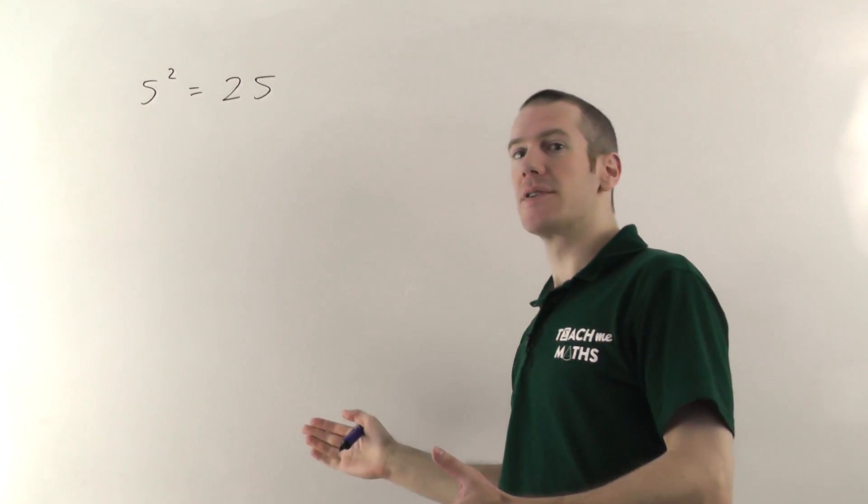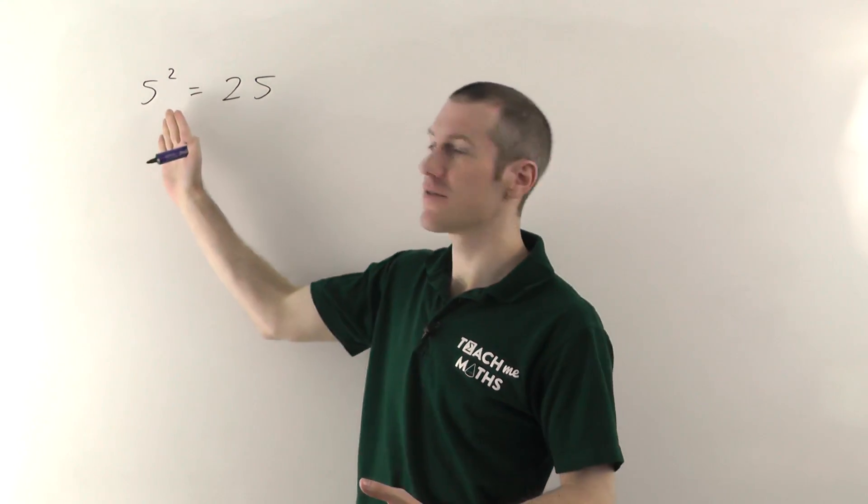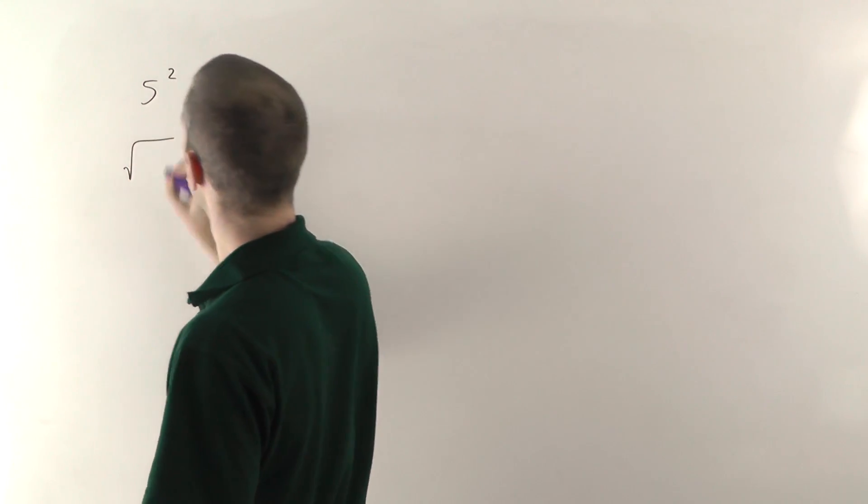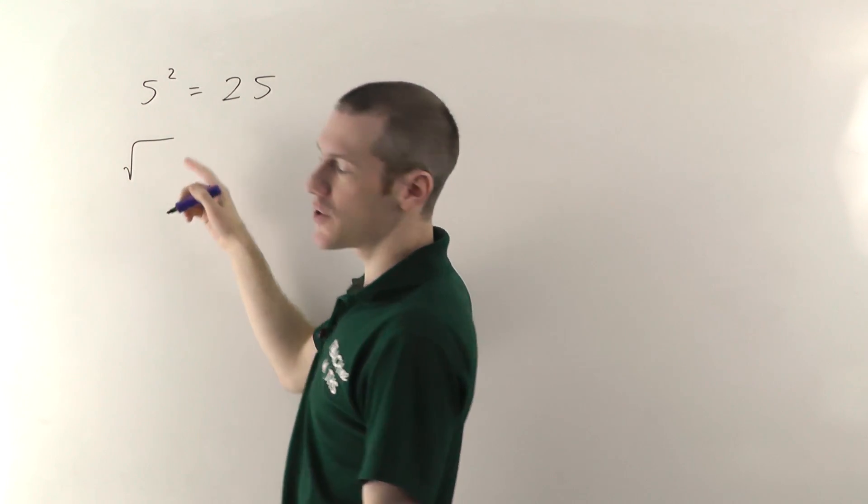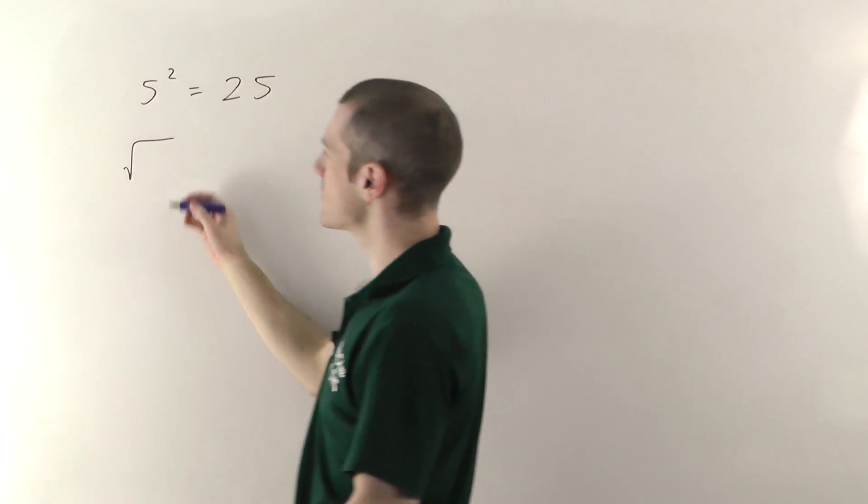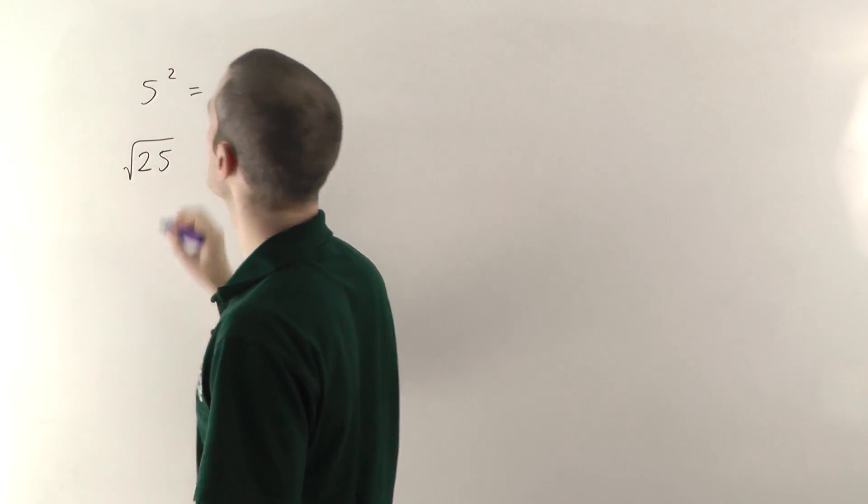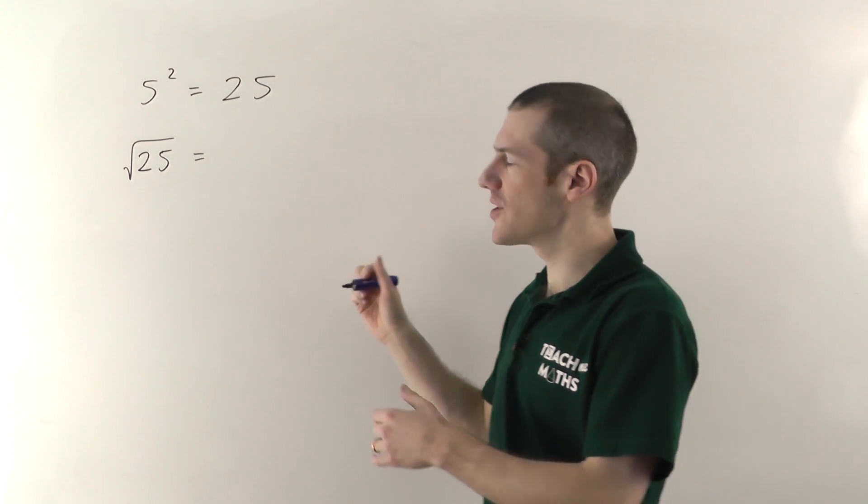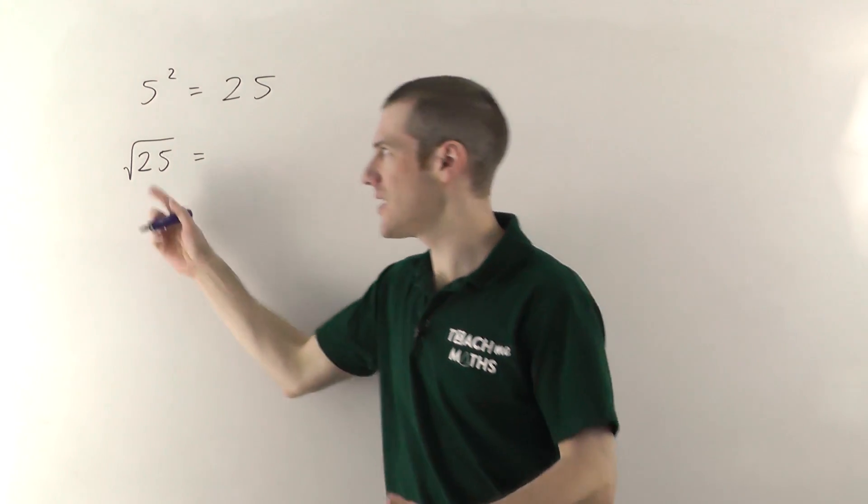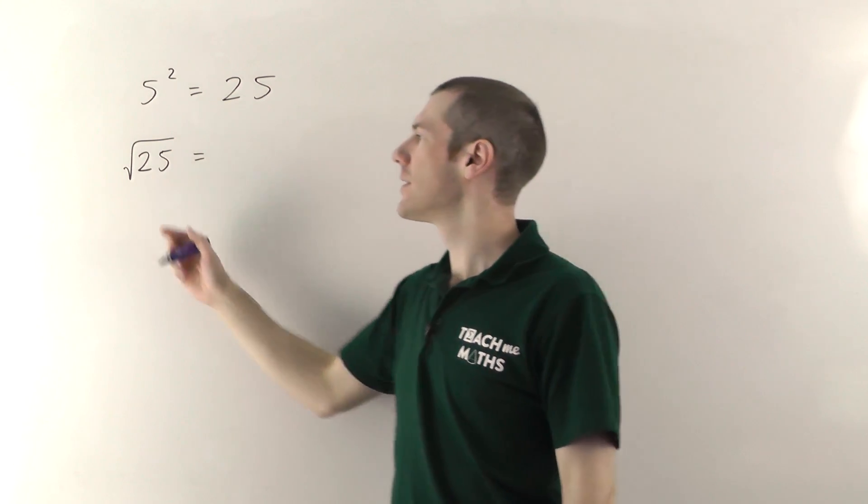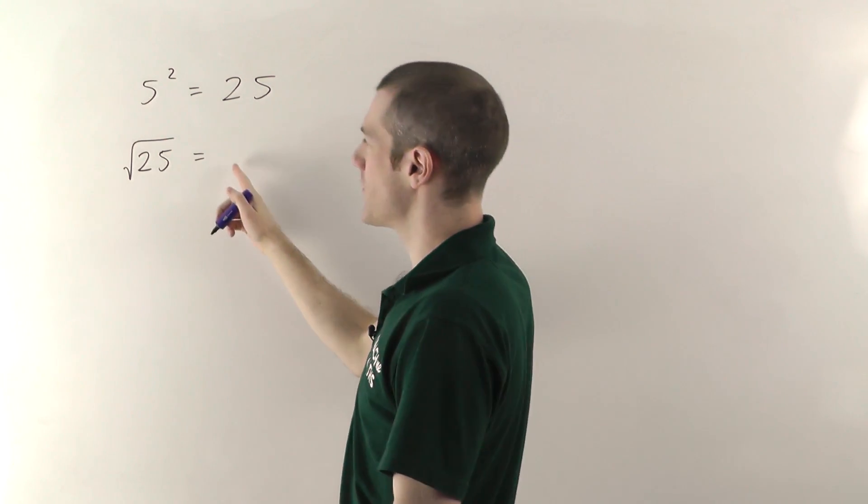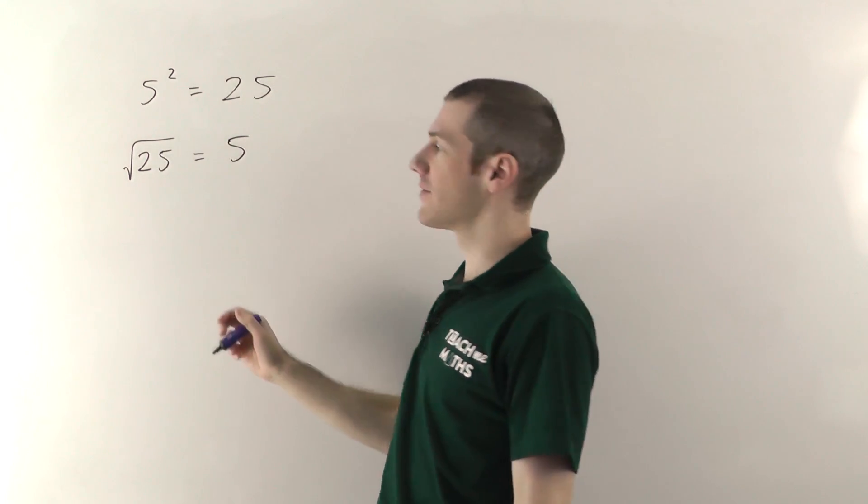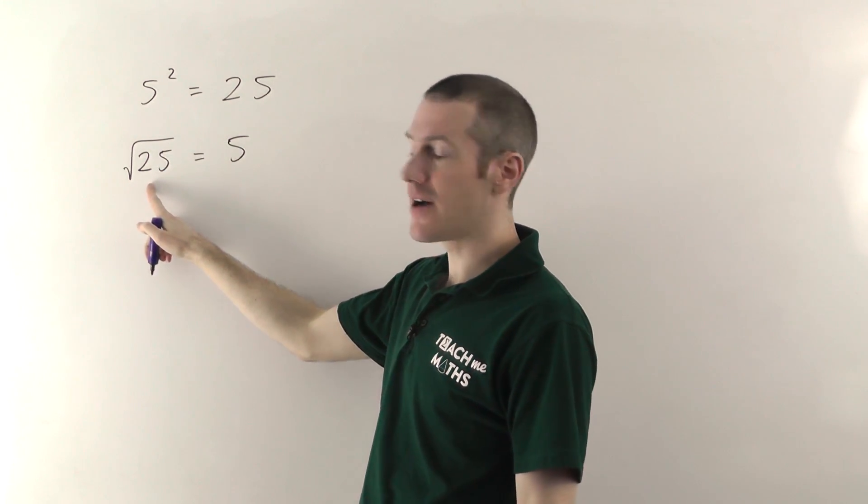The square root of something is the opposite of squaring it and you write it with this funny sort of tick symbol like that and the number you're going to square root goes inside it. So if we were to square root 25, the square root of 25 is the number that you would need to square in order to get 25. So in this case the number we have to square to get 25 would be 5 because 5² is 25. So the square root of 25 is 5.